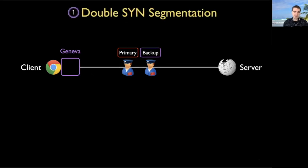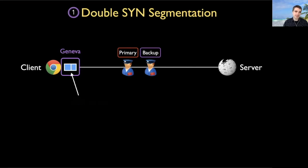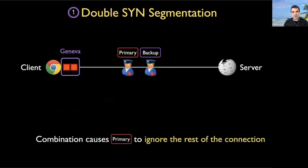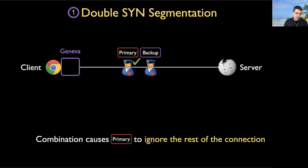The first strategy is called double SYN segmentation. Our client is about to start a new connection and send its SYN packet. We take that SYN packet and duplicate it — we send two SYN packets out. Next, when the client generates its TLS client hello, we capture that client hello, segment it, and send those segments out of order: the second half first, then the first half. It's this combination of sending two SYN packets followed by an out-of-order segmentation of the TLS client hello that's enough to disable the primary middlebox with 100% reliability, while having no effect on the backup middlebox.